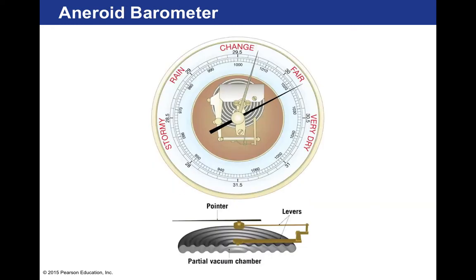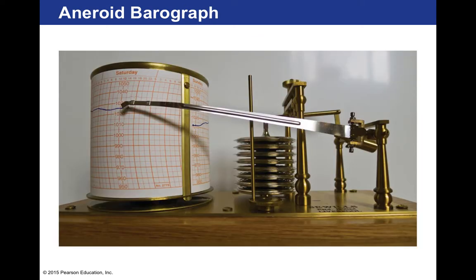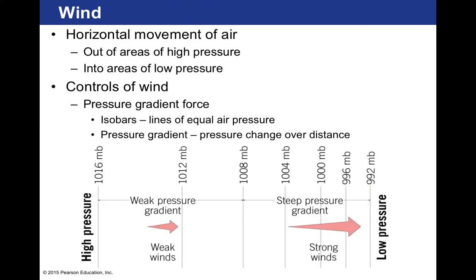This is a picture of an aneroid barometer and how it works. It changes the expanding air chamber, which changes the levers pictured in the diagram to indicate a change in air pressure. The barograph continuously records air pressure in millibars.